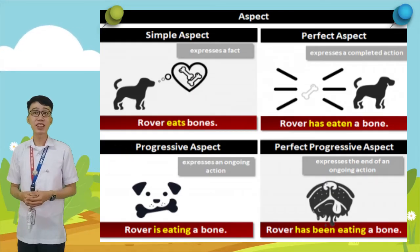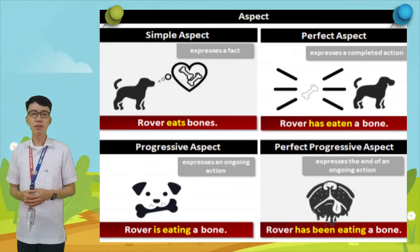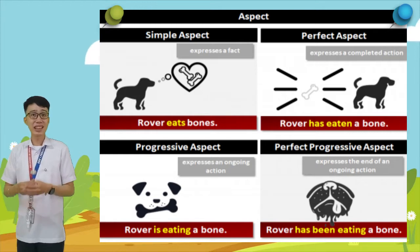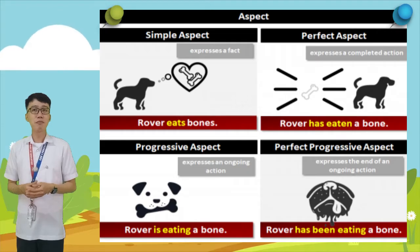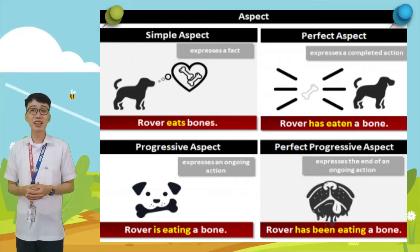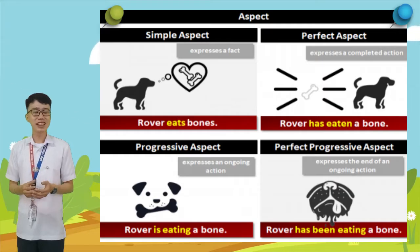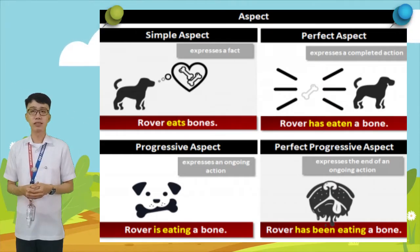Progressive aspect expresses an ongoing action. For example, 'Rover is eating a bone.' 'Has been eating' is in perfect progressive aspect form. What do you notice about the infographic that was shown? Good job, kids! The infographic shows the different tenses of verbs. Let us study the chart to learn more.